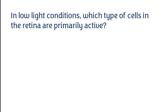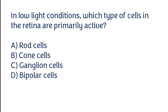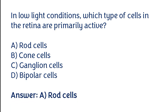In low light conditions, which type of cells in the retina are primarily active? Rod cells, cone cells, ganglion cells, or bipolar cells. The correct answer is option A — in low light conditions, rod cells are the type of cells which are primarily active in the retina.